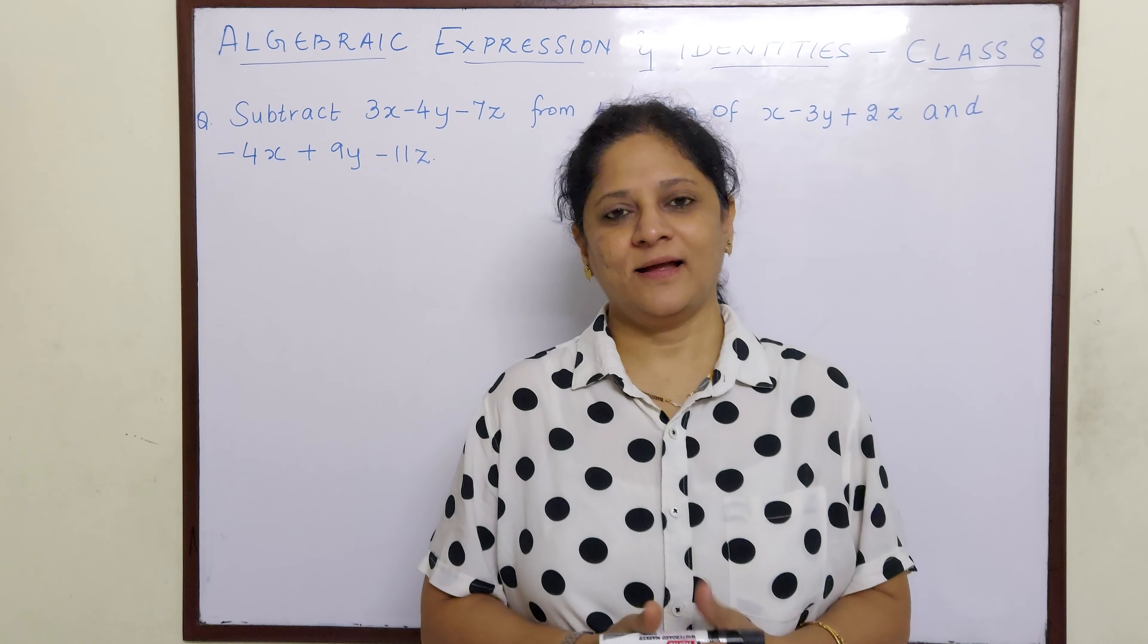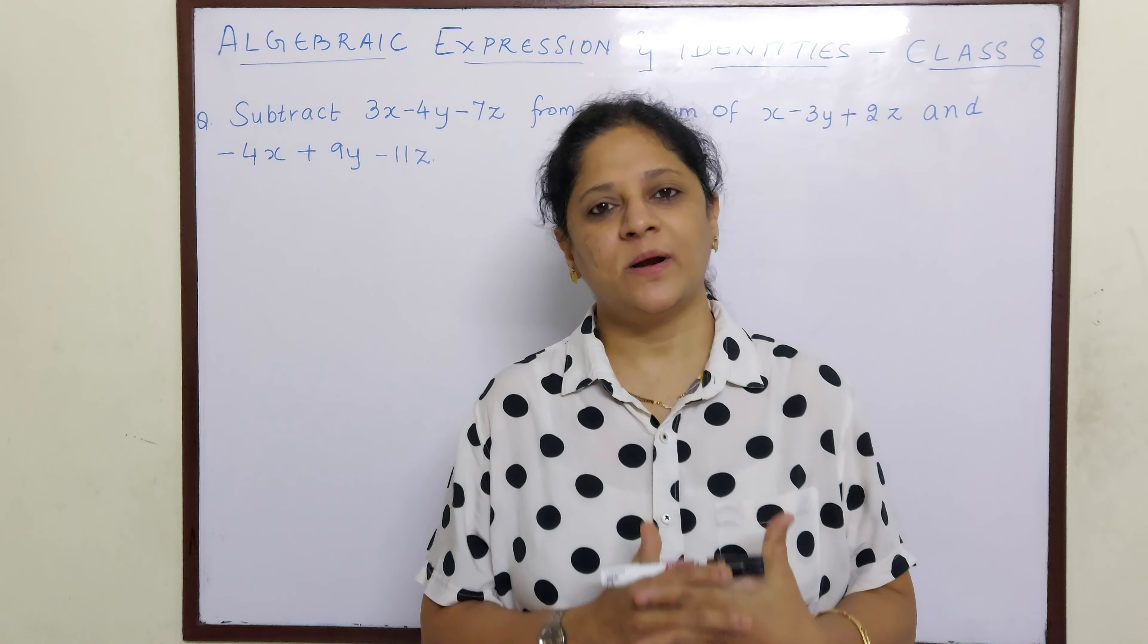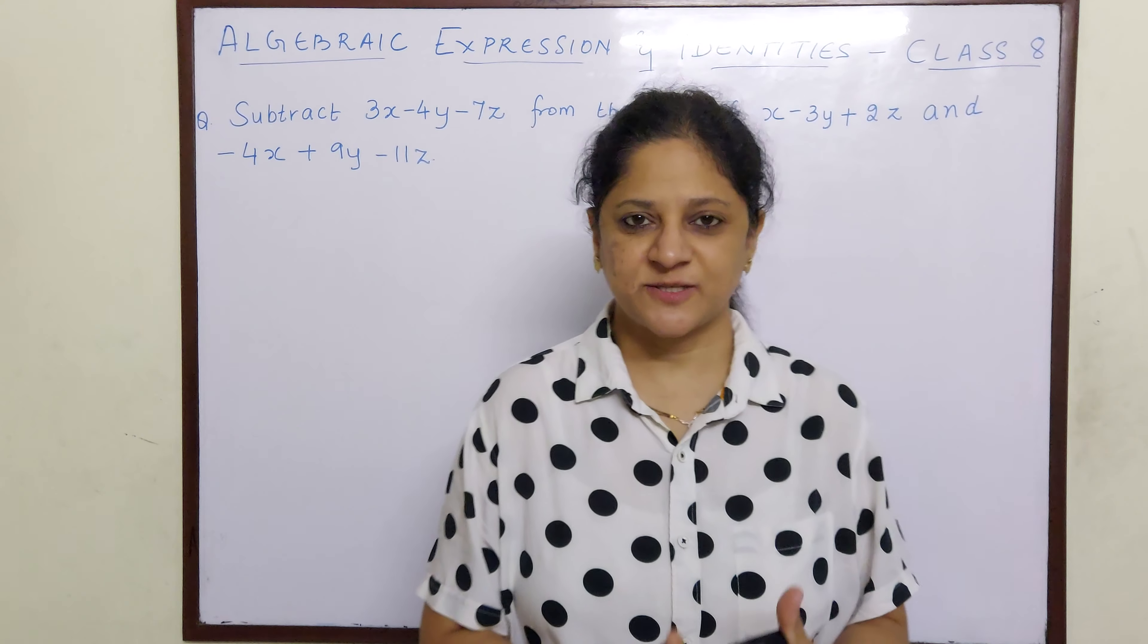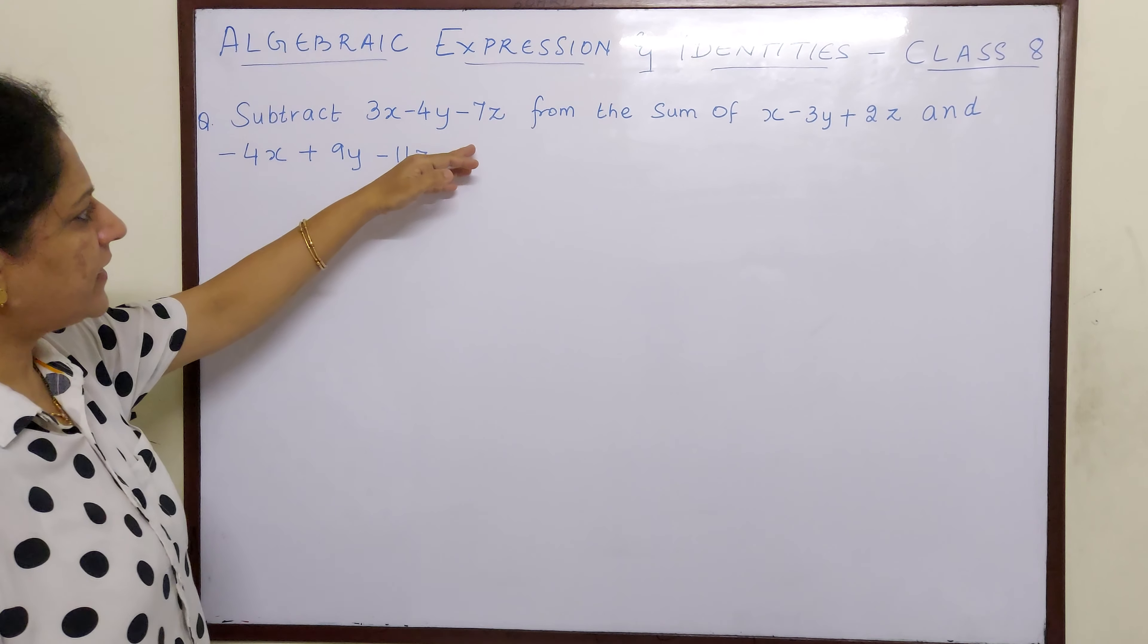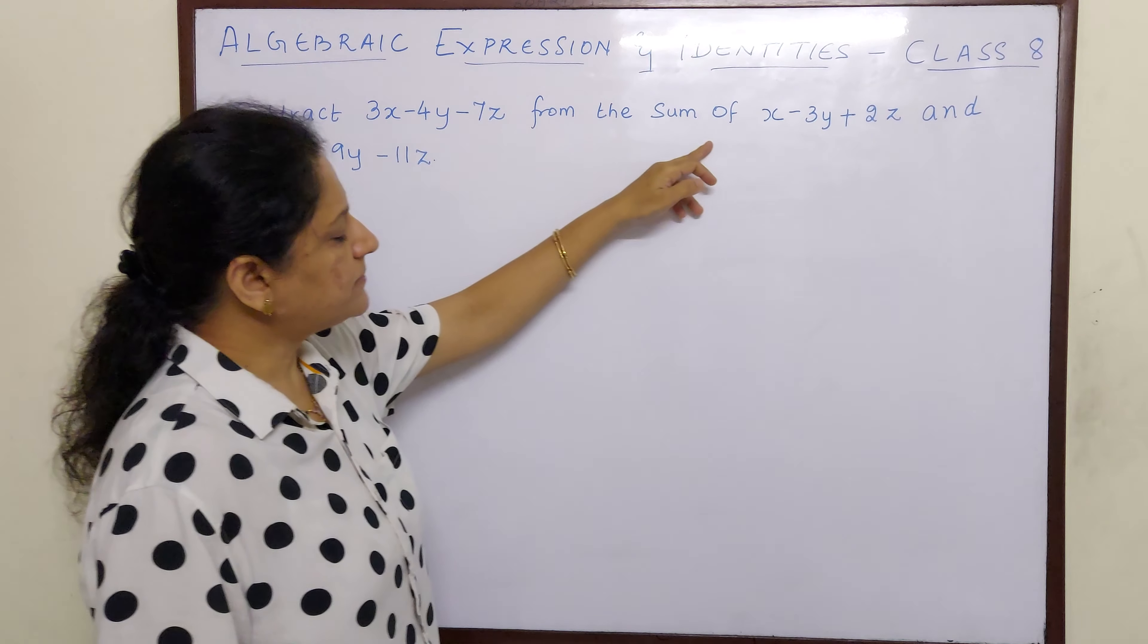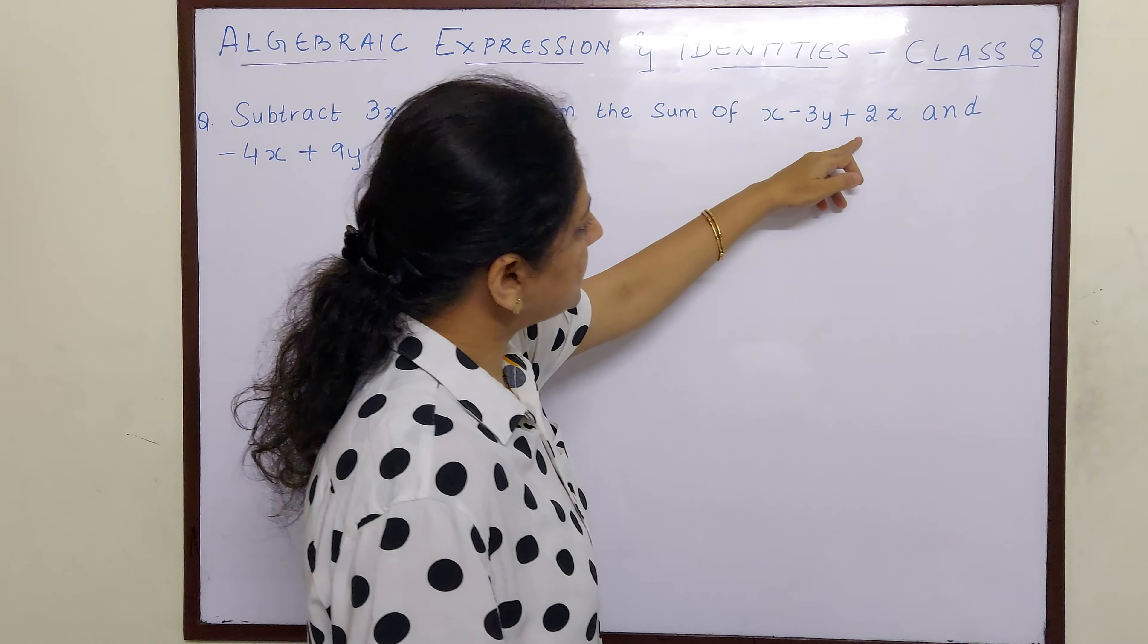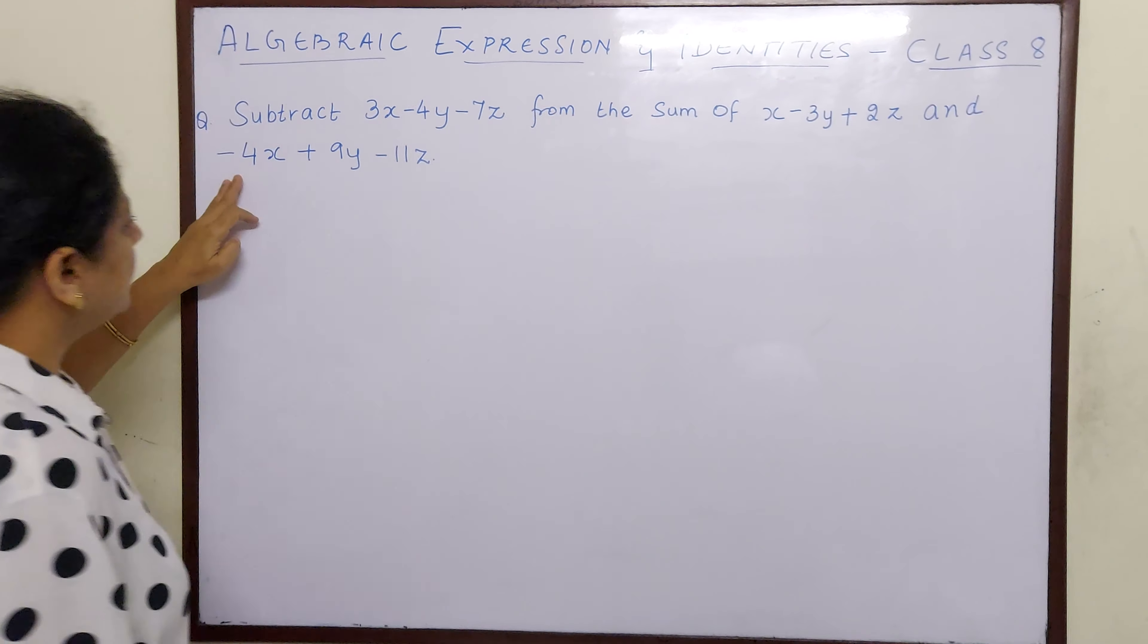Hello children, welcome back. Today we are going to do one more sum in algebraic expressions. Subtract 3x minus 4y minus 7z from the sum of x minus 3y plus 2z and minus 4x plus 9y minus 11z.